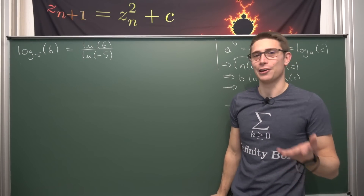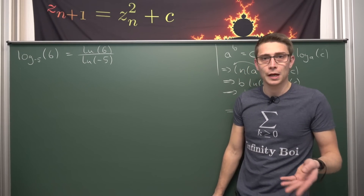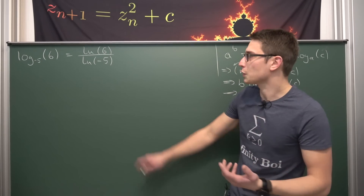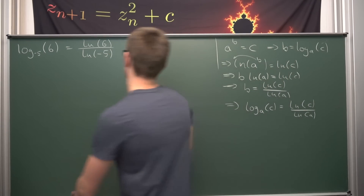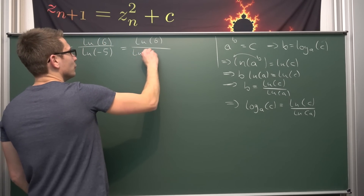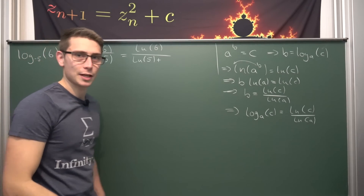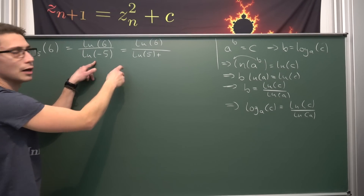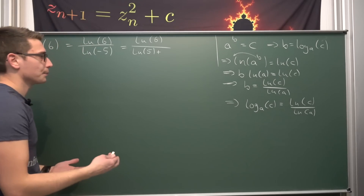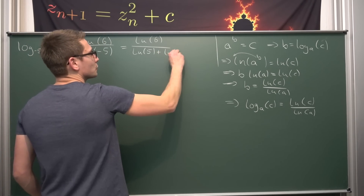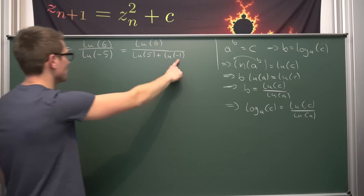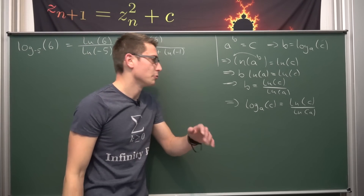Glad we did the video on logarithm of negative arguments before. Because if you watched that video, you know we can express the logarithm of negative 5 as the addition of the logarithm of the positive number — the absolute value of negative 5, which is 5. So this is ln(6) divided by ln(5) plus the natural log of negative 1. Using the log property, natural log of 5 times negative 1 breaks up as ln(5) plus ln(negative 1), which makes sense when we look at the complex plane.